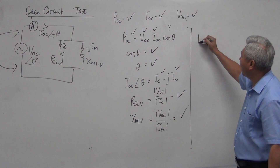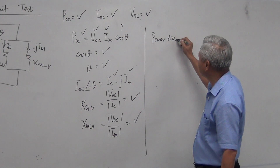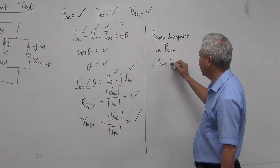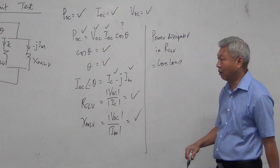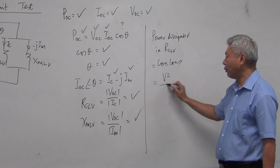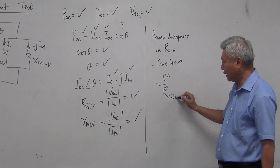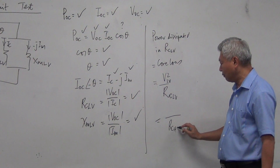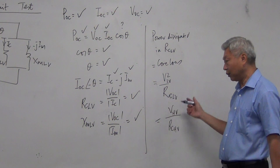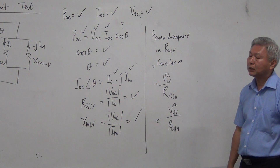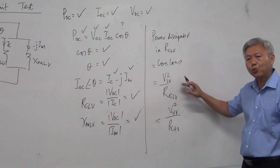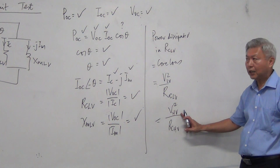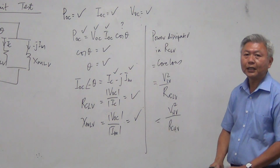The power dissipated in RC is called the core loss power — that's why the resistance is called the core loss resistance. You can also use the formula P equals V squared over R to find it. If you have RC referred to the low voltage side, use the low voltage V. If referred to the high voltage side, use the high voltage V. This is the power loss in the transformer.